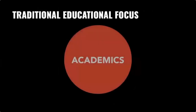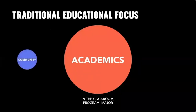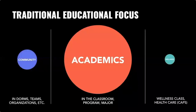We looked at the traditional educational focus centered on academics, which happens in the classroom, in programs and majors. Simultaneously, students are looking to belong in communities — in dorms, teams, and organizations. There's also a lot around wellness, though wellness is siloed to classes, centers, and clinics. What we've seen with academics, community, and wellness is that they are disproportionate, disintegrated, disconnected, and spatially siloed. As a psychologist, that translates to an internalized understanding of profession relative to community and wellness in students' lives.